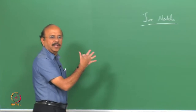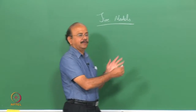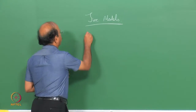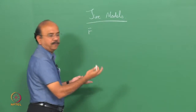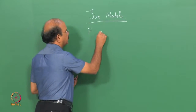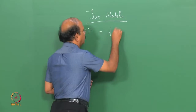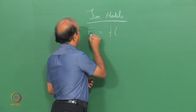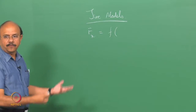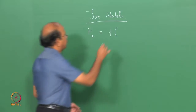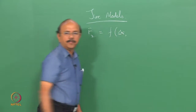Either you can give it as a lookup table, which some of the software accepts, or through a formula which is called a model. A formula which links the slip — for example, if I write F, it can be Fx, Fy, Fz, whatever it is — longitudinal force Fx as a function of kappa or sigma, the slip, then it can be normal force Fz which is acting.